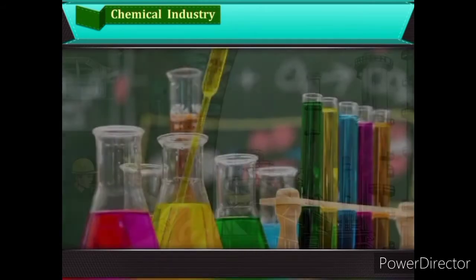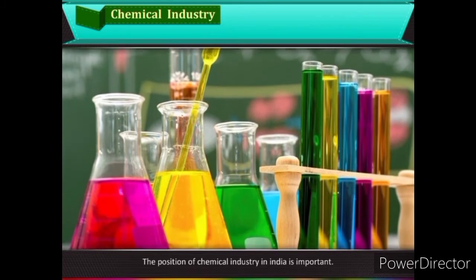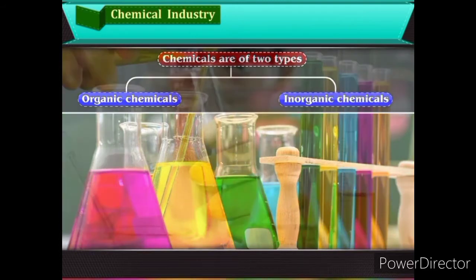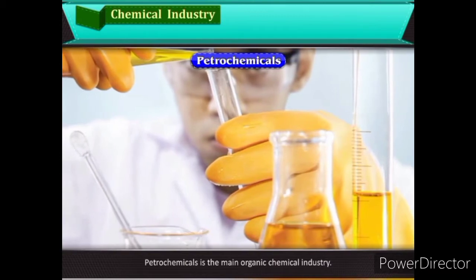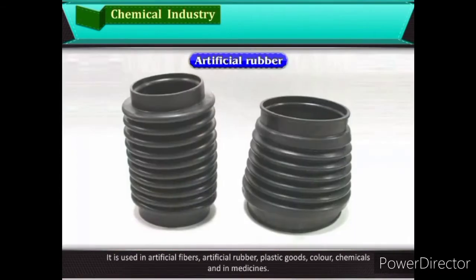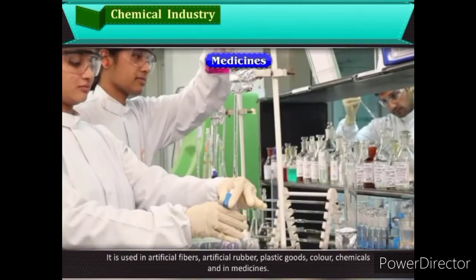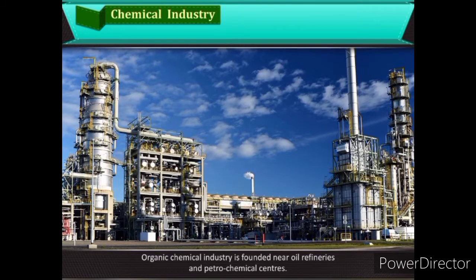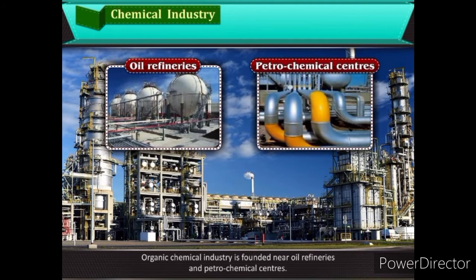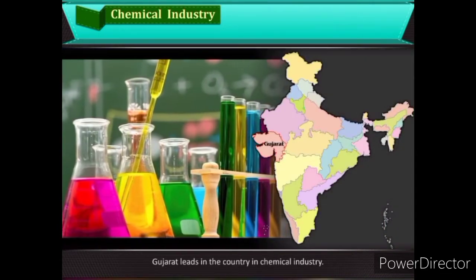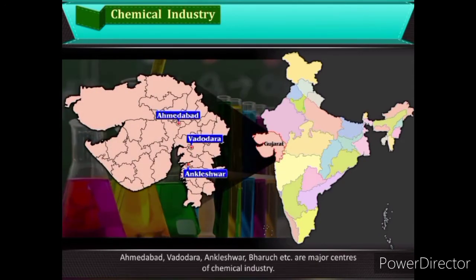Chemical Industry: The chemical industry holds an important position in India. Chemicals are of two types: organic and inorganic. Petrochemicals is the main organic chemical industry, used in artificial fibres, artificial rubber, plastic goods, colour, chemicals, and medicines. Organic chemical industry is founded near oil refineries and petrochemical centres. India has an important position in the world in the insecticide industry. Gujarat leads the country in chemical industry; major centres include Ahmedabad, Vadodara, Ankleshwar, and Bharuch.